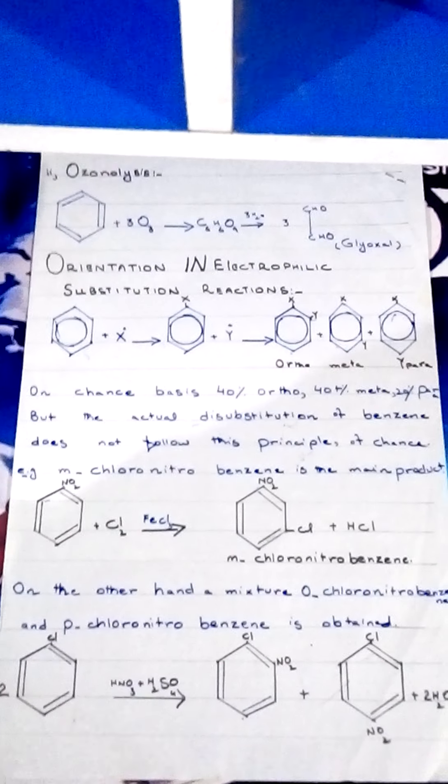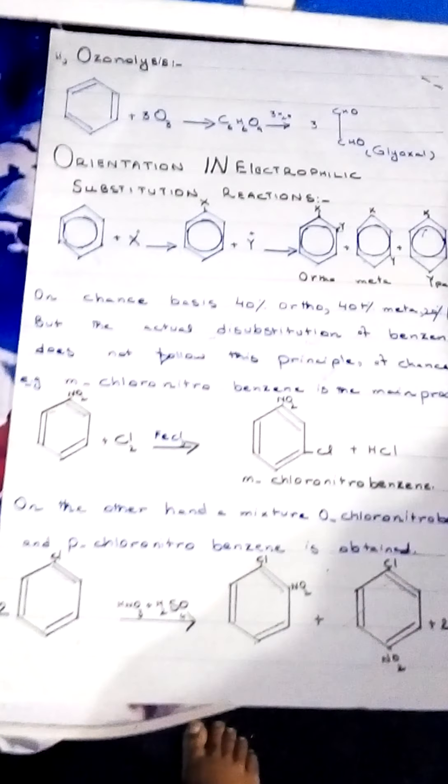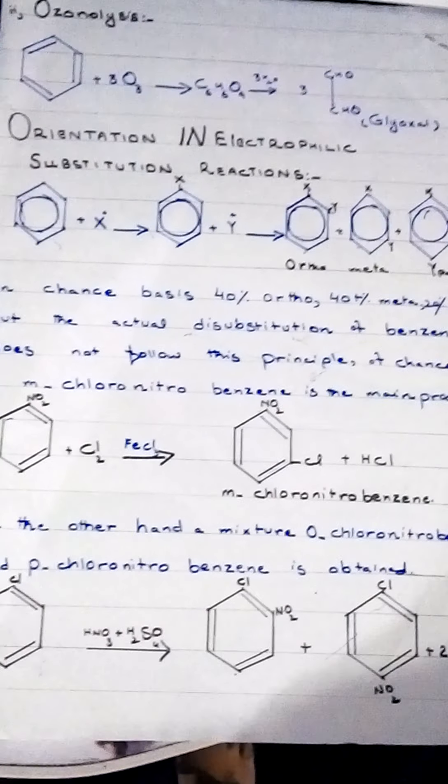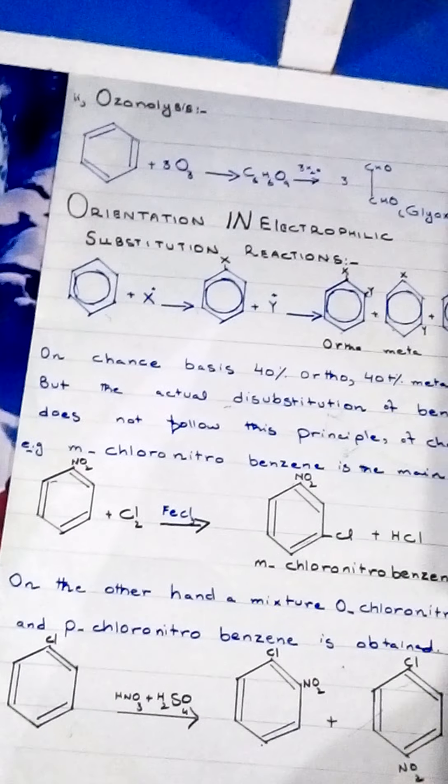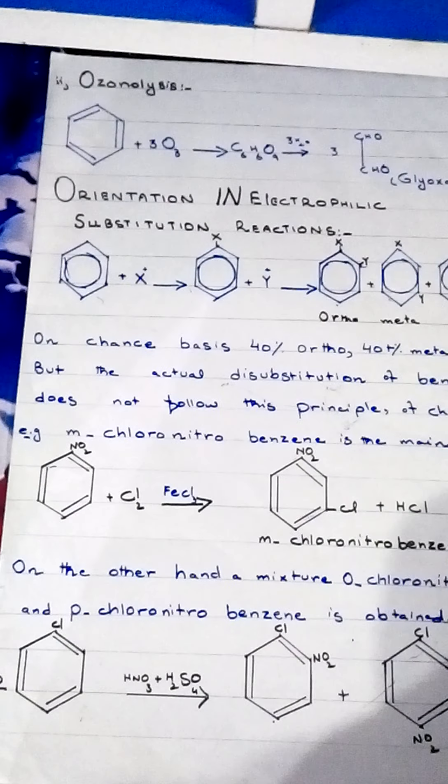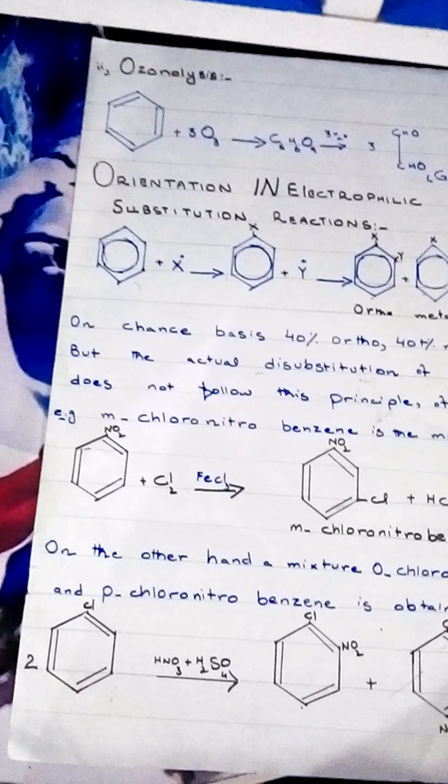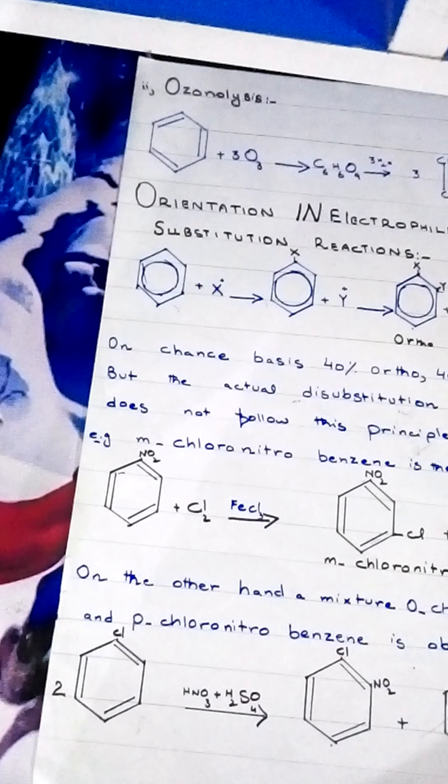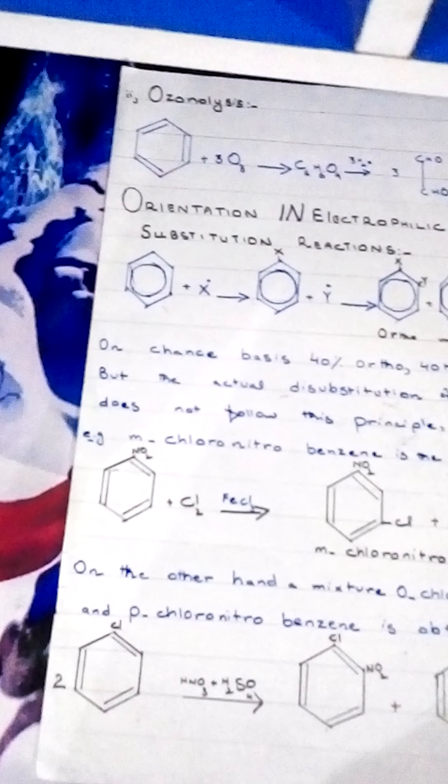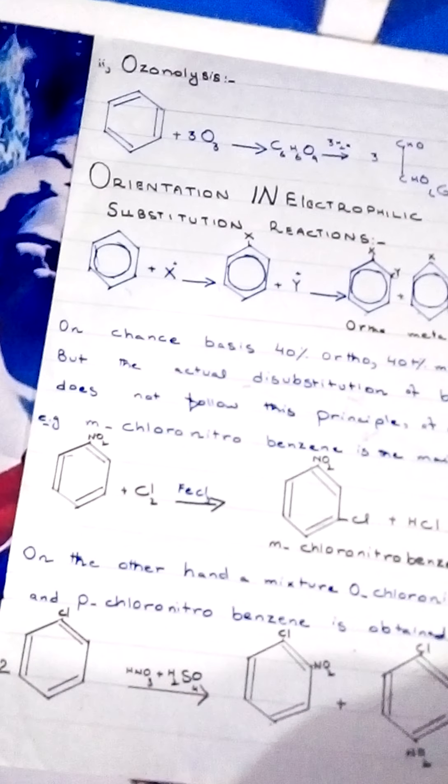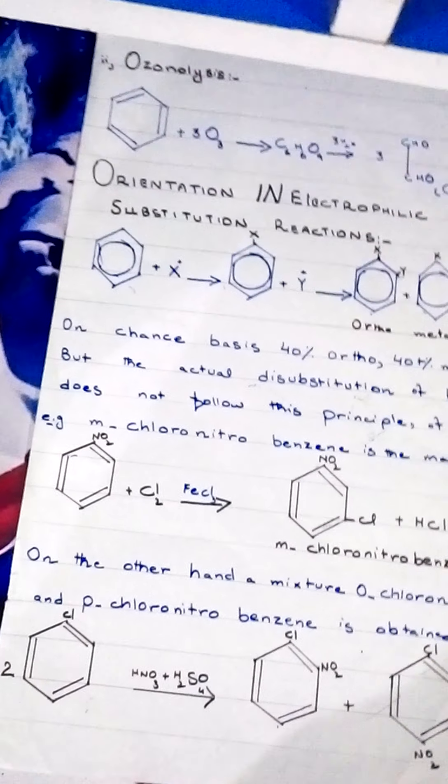Next, a very important topic is orientation in electrophilic substitution reactions: how an already present group in the benzene ring will direct the incoming group to which positions. Orientation is very important. Orientation is of two types: one is meta directing and one is ortho and para directing. First of all, we will study ortho and para directing orientation.